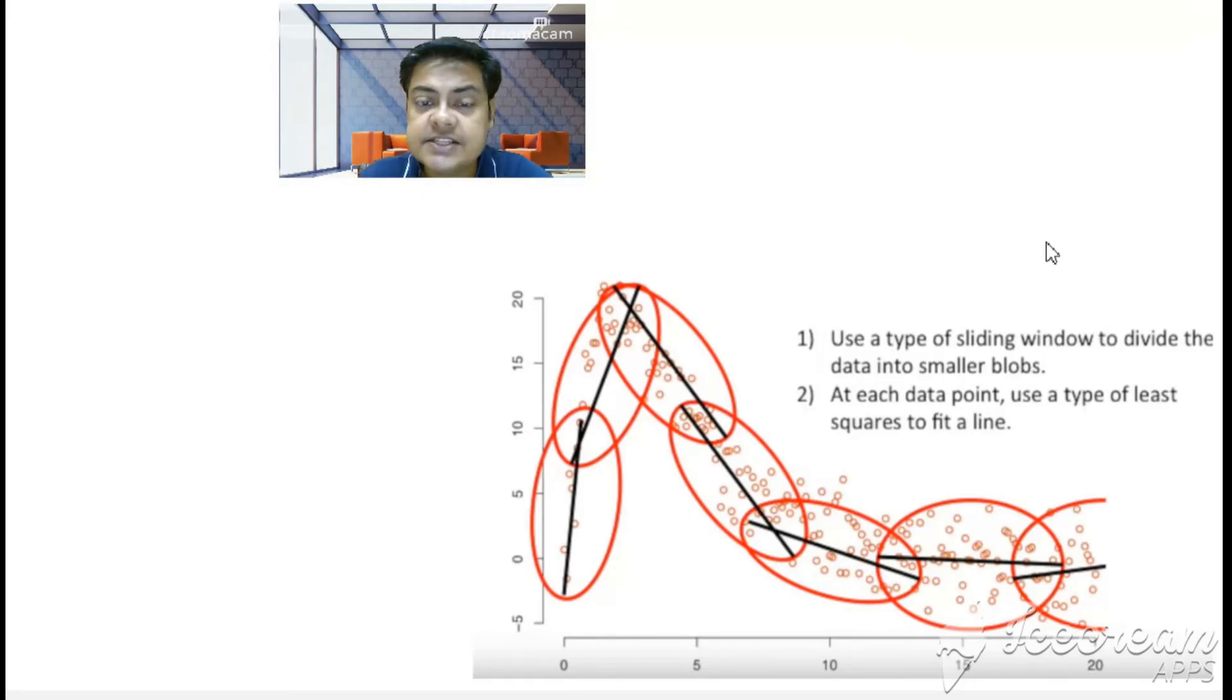You can see the least square line, the black line, for each red blob, and the blobs are actually overlapping and the least square lines are also overlapping. The point where two black lines are connecting is called a knot, and we'll learn about it more.